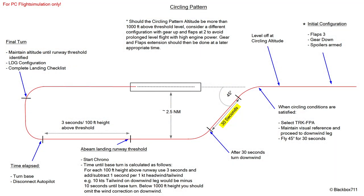Quite often a circling approach takes place at very low altitude. The lowest altitude or height above the airport can be 600 feet, for example, and that is very low, so you'll come across these possibilities sometimes. However, very often airports will give you a predefined circling height that will take care of any obstacles that you might overfly. In this pattern you have to maintain visual contact not only with the terrain but also with the landing runway.